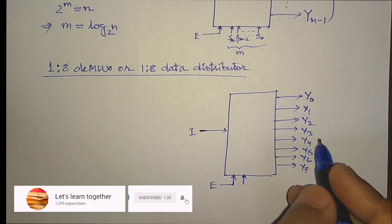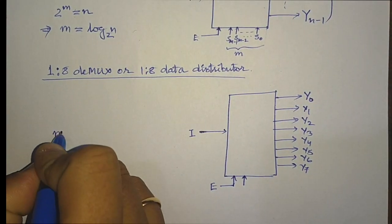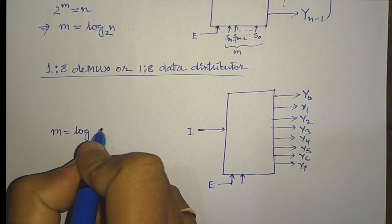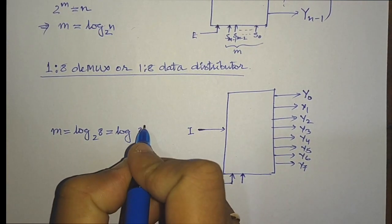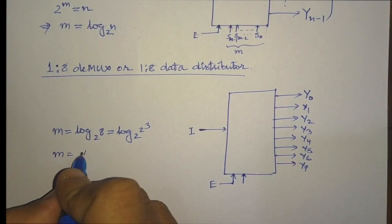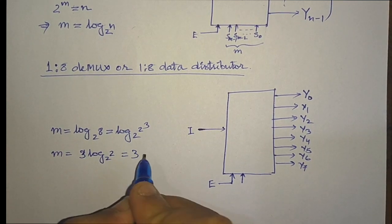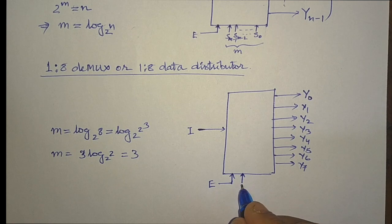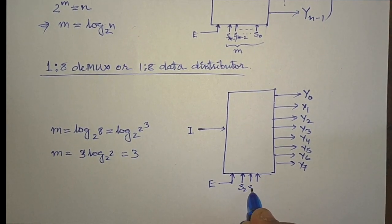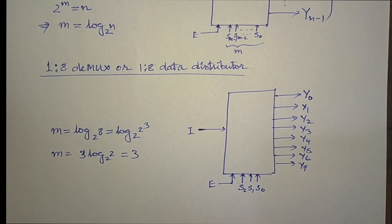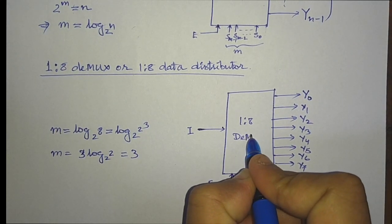We will have select lines — so how many? We calculate using the formula: m = log₂(8) = log₂(2³) = 3·log₂(2) = 3. So we require 3 select lines: S2, S1, and S0. This completes the block diagram of the 1-to-8 demultiplexer.